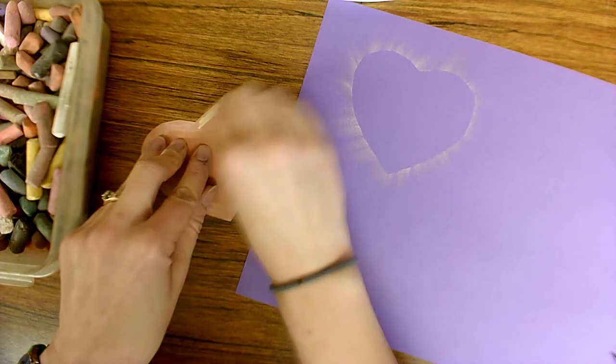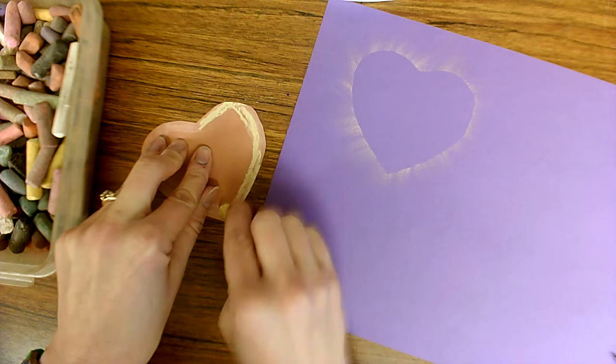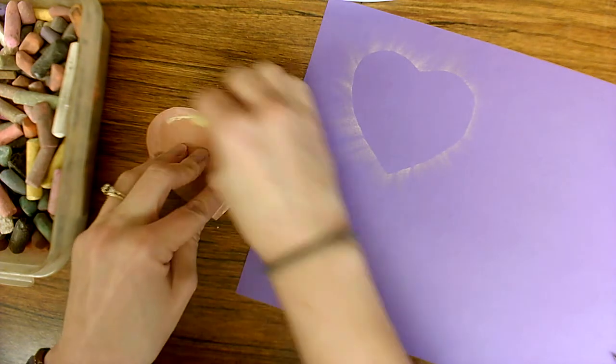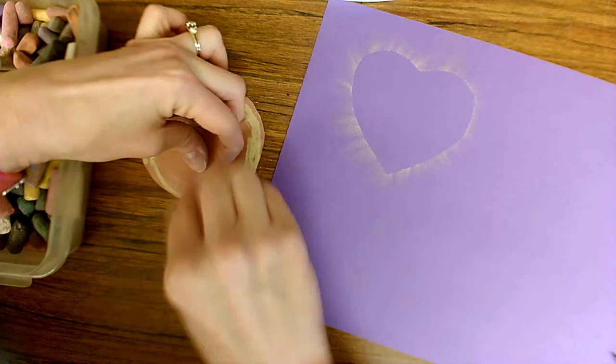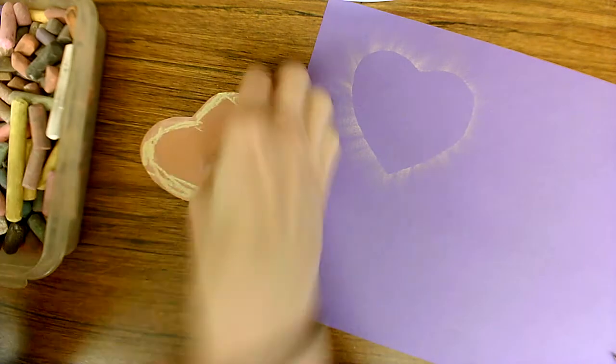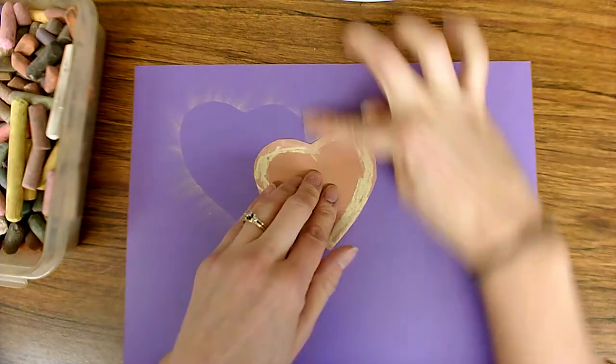So you pick another color and color right on top of where you did the first time on your heart. It doesn't have to be messy, so make sure the chalk is really thick. Then lay it on.